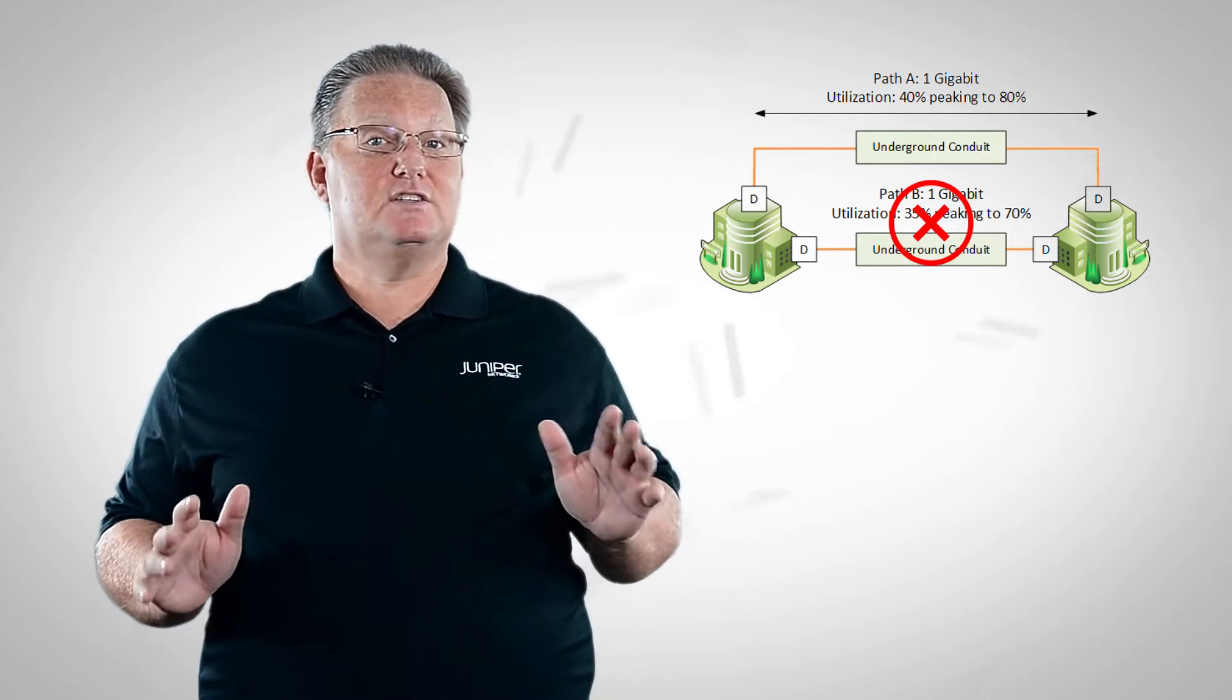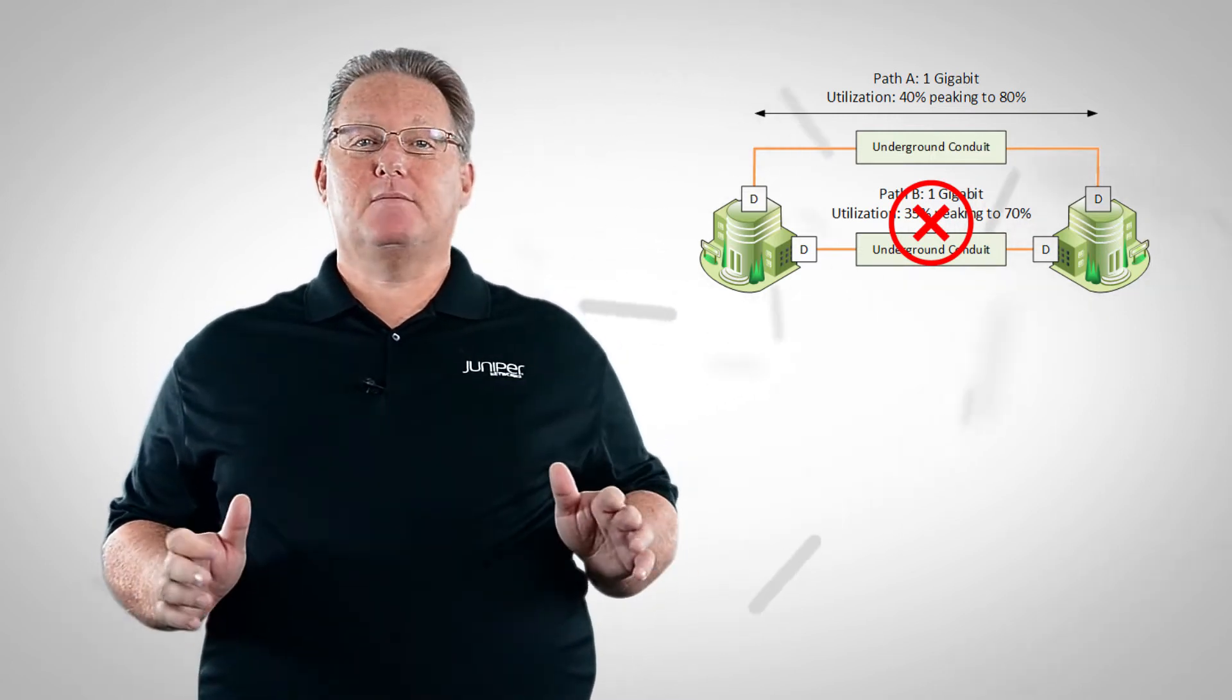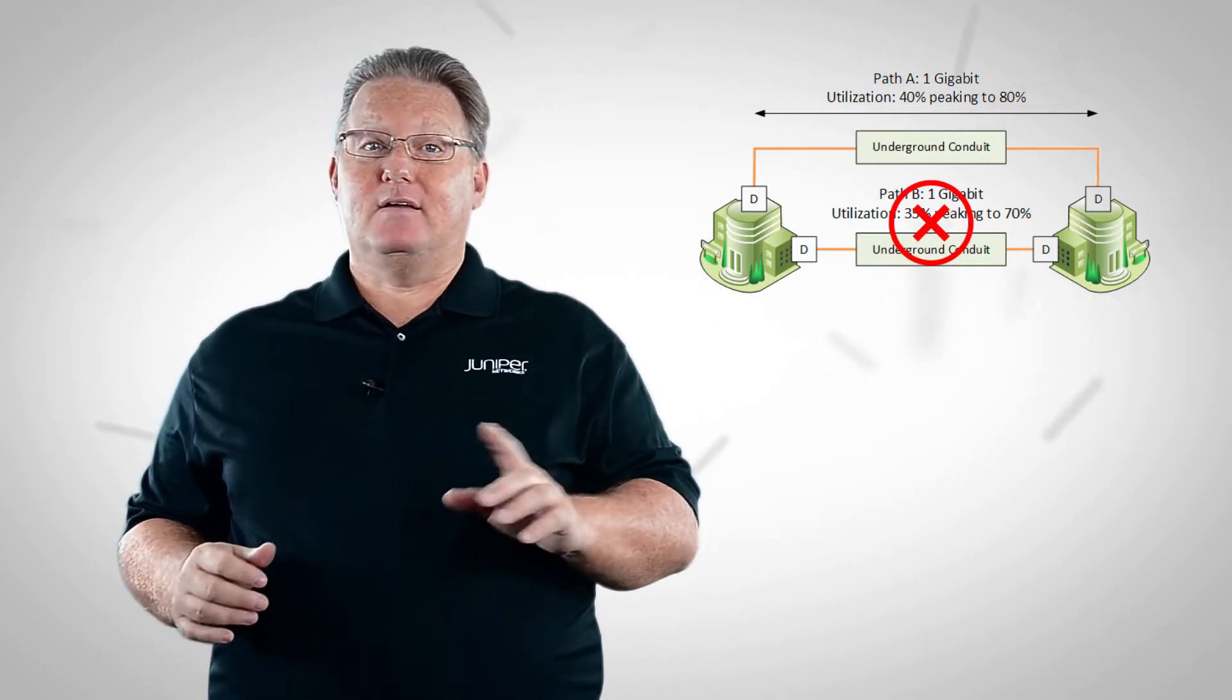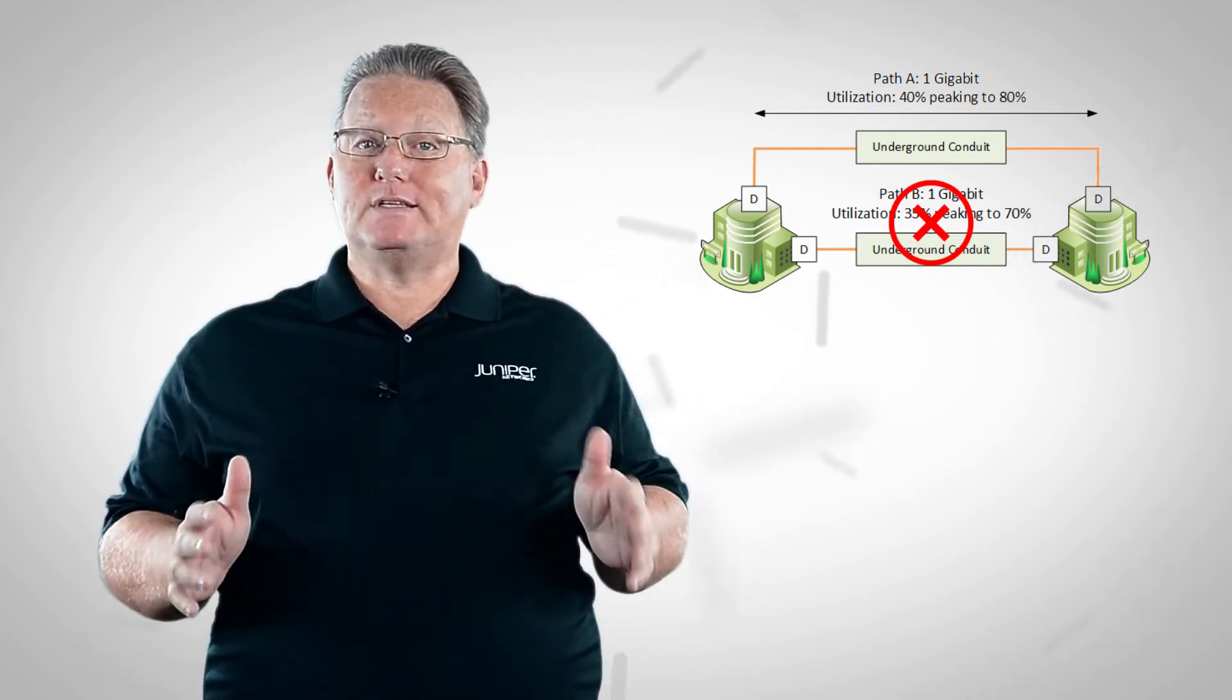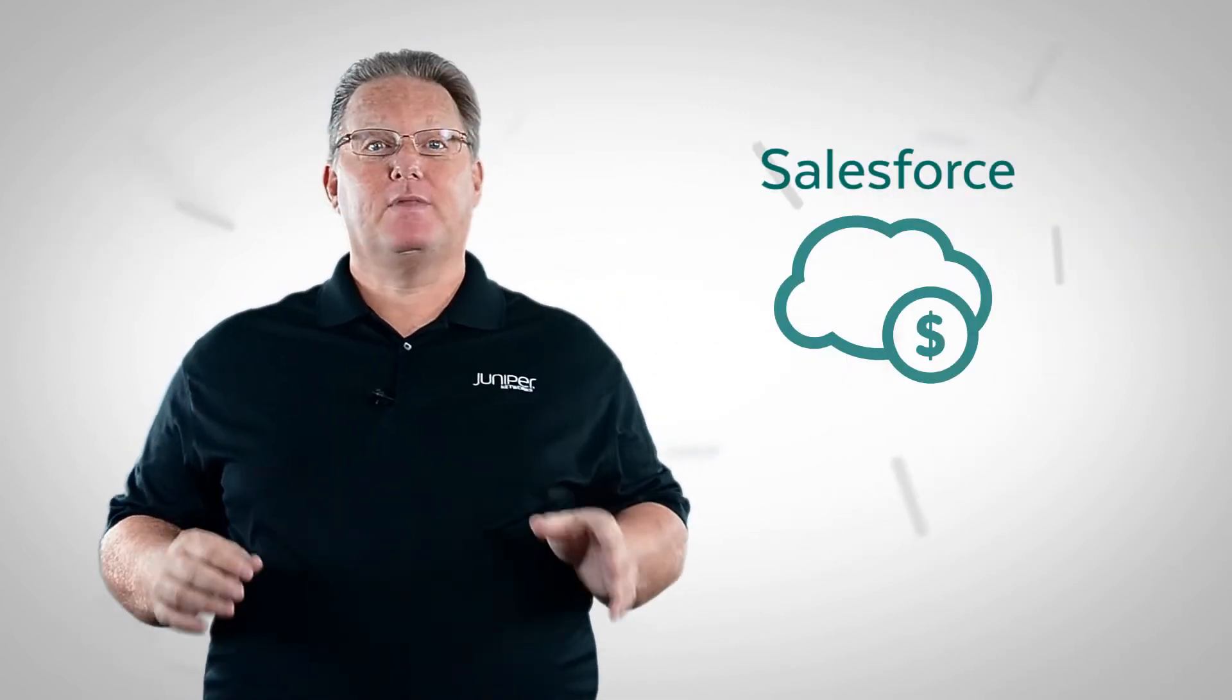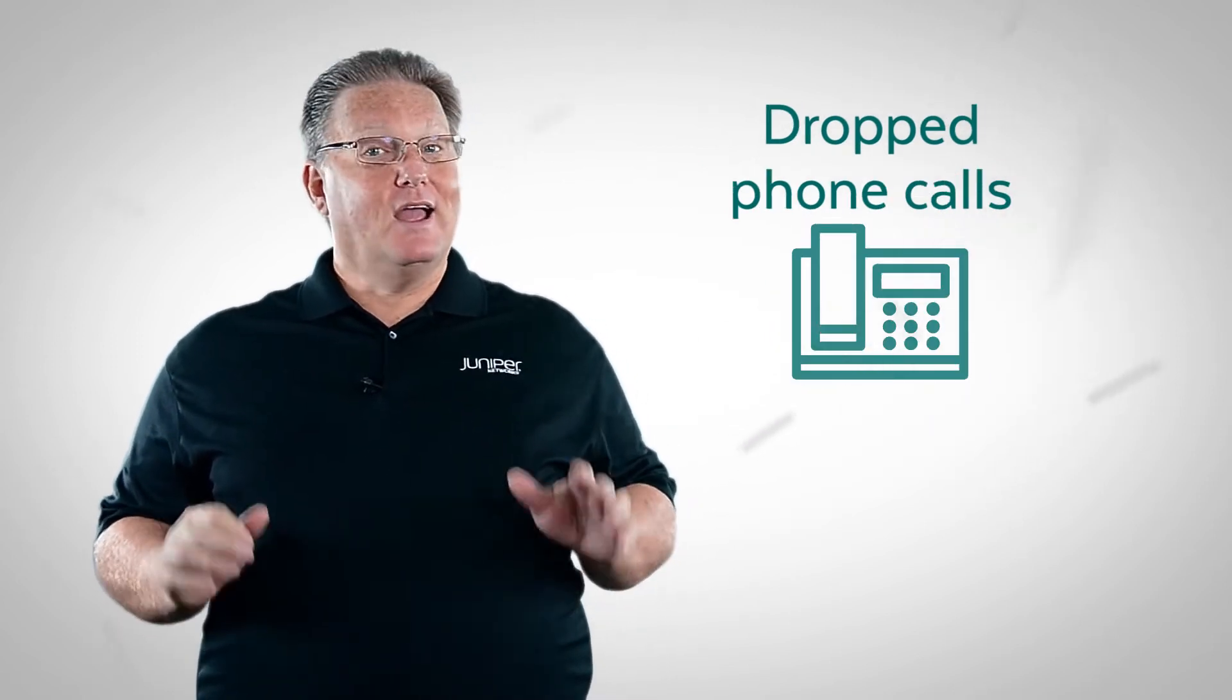Uh oh, things just changed significantly. Now path A receives all of the traffic that was transiting path B. The problem is that path A doesn't have the bandwidth to accommodate all the traffic. This means that some packets are going to get dropped. Now you're starting to hear user complaints about poor performance of Salesforce, dropped video conferences, and phone calls. In the blink of an eye, we've lost our hero status.